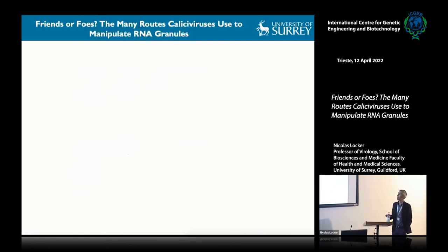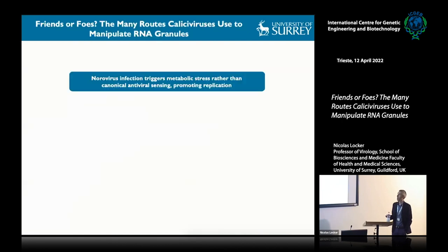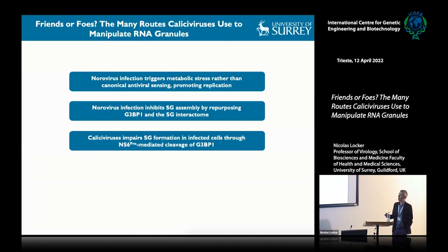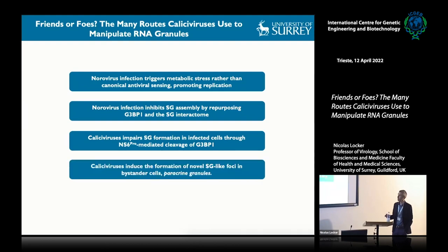To summarize the four key messages: norovirus infection induces a metabolic stress that promotes replication. It blocks stress granule assembly by repurposing G3BP1 into replication complexes. FCV inhibits stress granule assembly by cleaving G3BP1. And FCV induces the formation of novel stress granule-like foci in bystander cells via a paracrine signaling mechanism, leading to the formation of paracrine granules that are important in controlling the antiviral response.